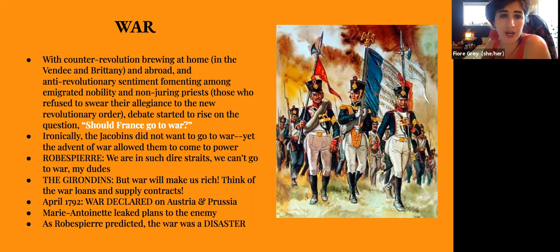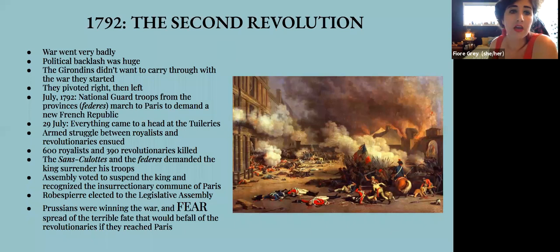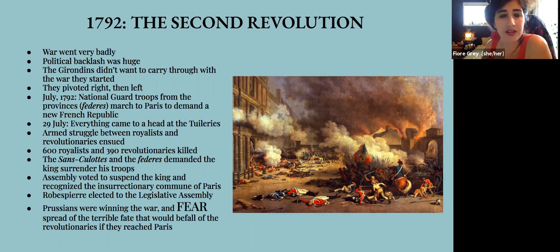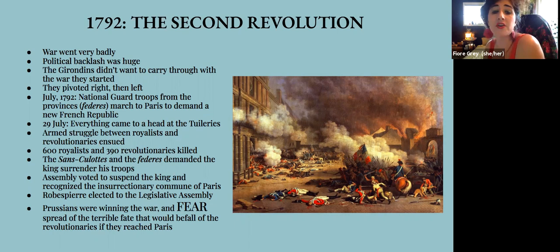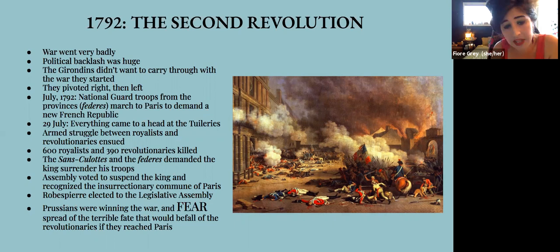In April 1792, war was declared on Austria and Prussia, and Marie Antoinette leaked plans to the enemy — so it went very badly at first, exactly as Robespierre predicted. The political backlash was huge. The Girondins didn't want to carry through with the war they had started and vacillated. In July 1792, the National Guard troops from the provinces — the Fédérés — marched to Paris to demand a new French Republic. On the 29th, armed struggle between royalists and revolutionaries at the Tuileries left 390 revolutionaries and 6 royalists killed. The assembly voted to suspend the king, and Robespierre was elected to the legislative assembly.